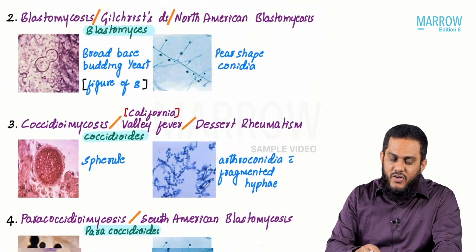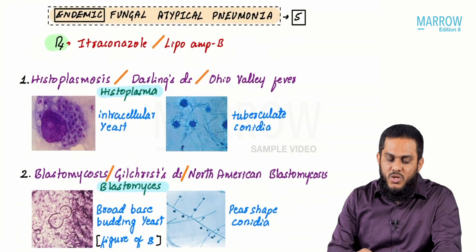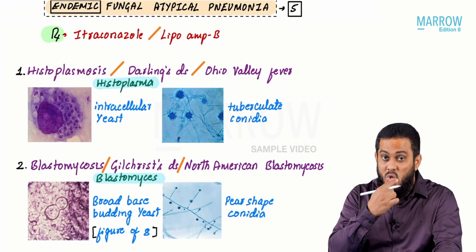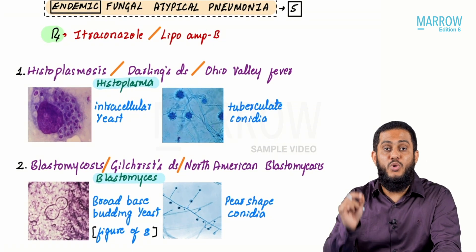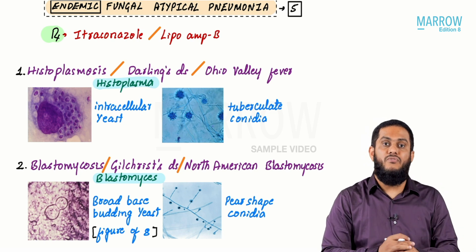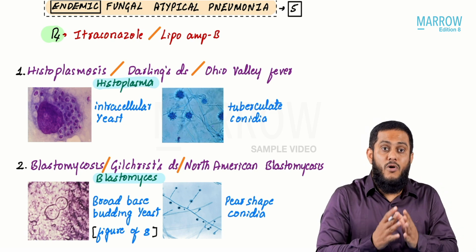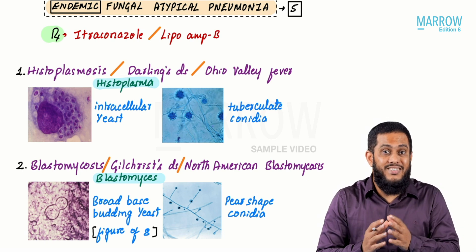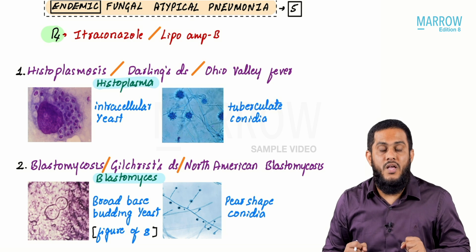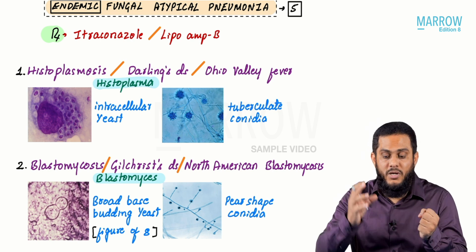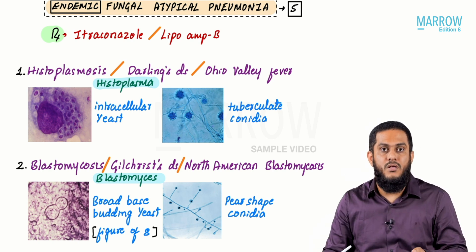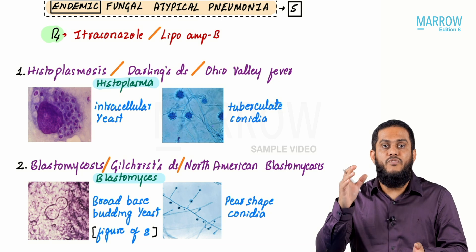All five fungi that cause endemic fungal pneumonia are dimorphic fungi. Dimorphic fungi are fungi which exist in the yeast form and also in the mold form. Therefore, you have to know the yeast form and mold form for all of them.